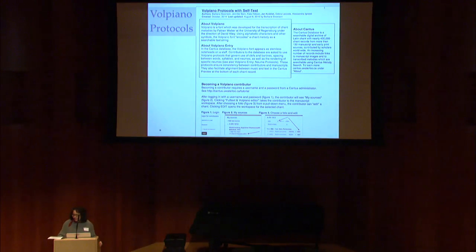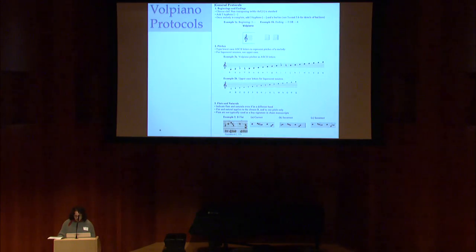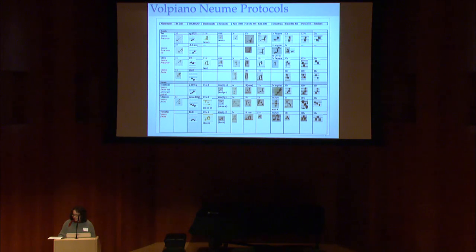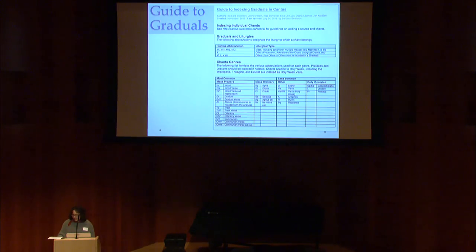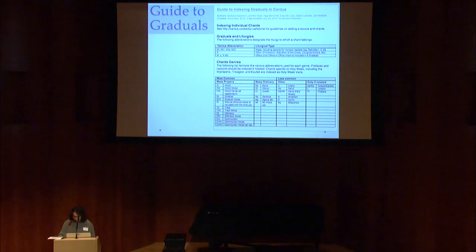These include the Volpiano protocols, which provide step-by-step guidelines on how to input and format melodic transcriptions in the Cantus database. The Volpiano Noom protocols were designed to help student research assistants transcribe specific Noom shapes from manuscripts dating from the 11th to 16th centuries across various geographic regions. The text entry and editing guidelines help contributors distinguish between the standardized text field and manuscript text fields in Cantus. The guide to indexing graduals was developed when Cantus expanded from a resource for indexing antiphoners to include graduals.